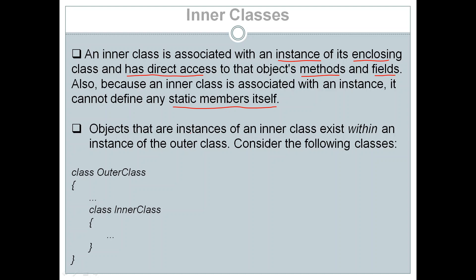Objects that are instances of an inner class exist within an instance of the outer class, meaning we create objects of the inner class through objects of the outer class. Here is the syntax for defining an inner class: we have an outer class and inside it we have an inner class. Notice there is no static keyword before the class declaration, which is what makes it an inner class.